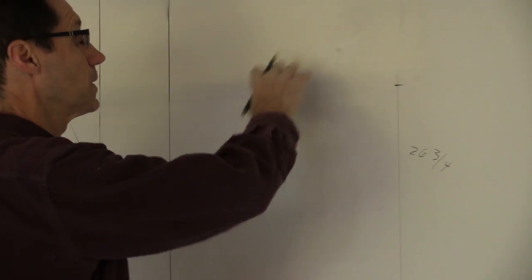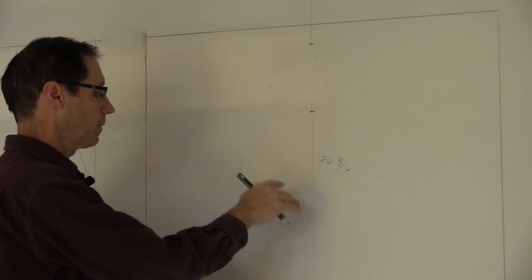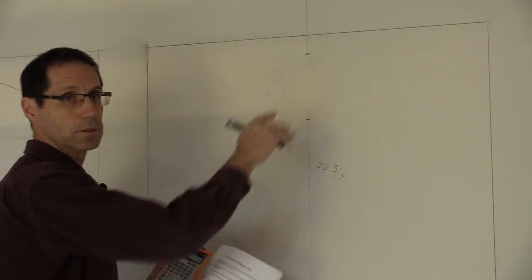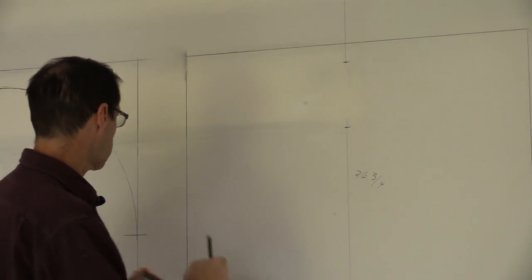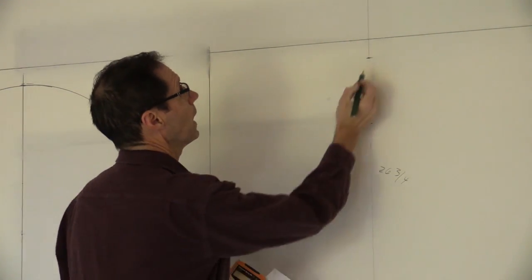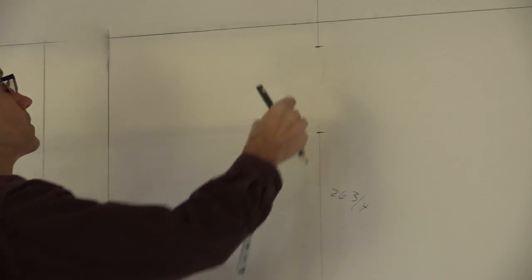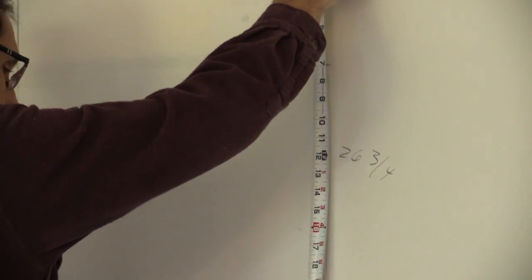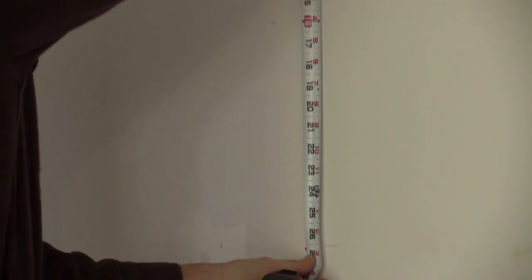So 26.75 inches is the radius of this segment I need, of the circle that I need that I'm going to just use a segment of for my arch. So like the other one, it was 18. This one is going to be 26.75 inches. So down from the top of this archway, I have to measure down 26.75 inches.